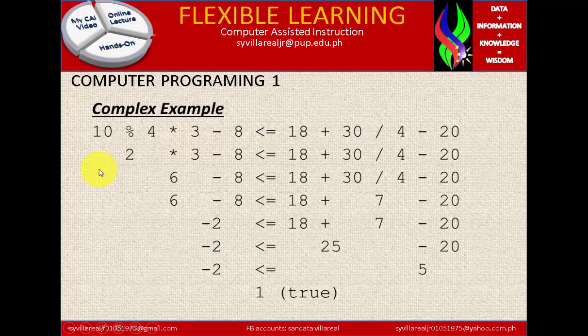Now complex example. Complex again - it is a combination of relational expression and arithmetic expression. So we have 10 modulo 4, that is modulo. 10 modulo 4 multiplied by 3 is subtracted by 8, which is less than equal to 18 plus 30 divided by 4 minus 20. So it is true or false. Put up an answer like a numeric because that is a complex example.